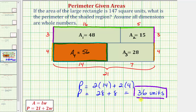This question doesn't ask, but if it did, notice how we could also determine the perimeter of the larger rectangle, because now we know its dimensions would be seven units by twenty-one units. I hope you found this helpful.